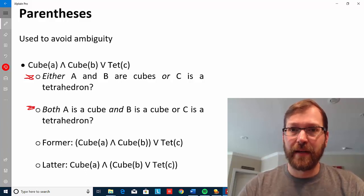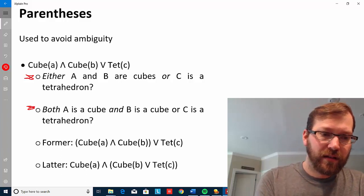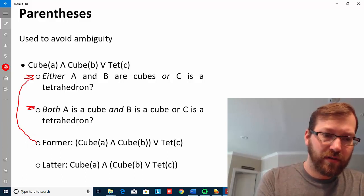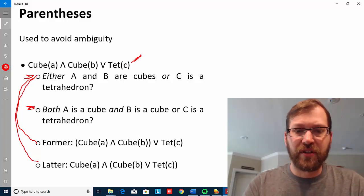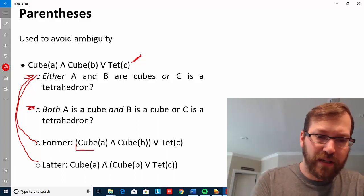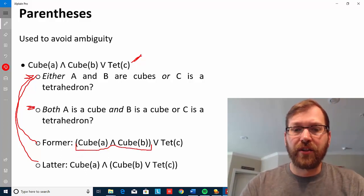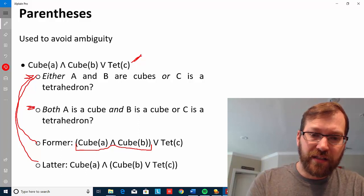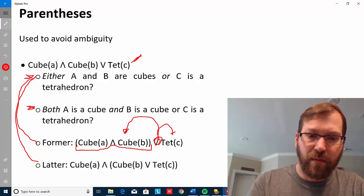So we need to be able to separate those out. If we look at these bottom two versions of our first FOL sentence, we'll see that it puts parentheses in different places. By putting these parentheses here, it sets that off as a unit and lets us know that this symbol is connecting this complex sentence with this atomic sentence.